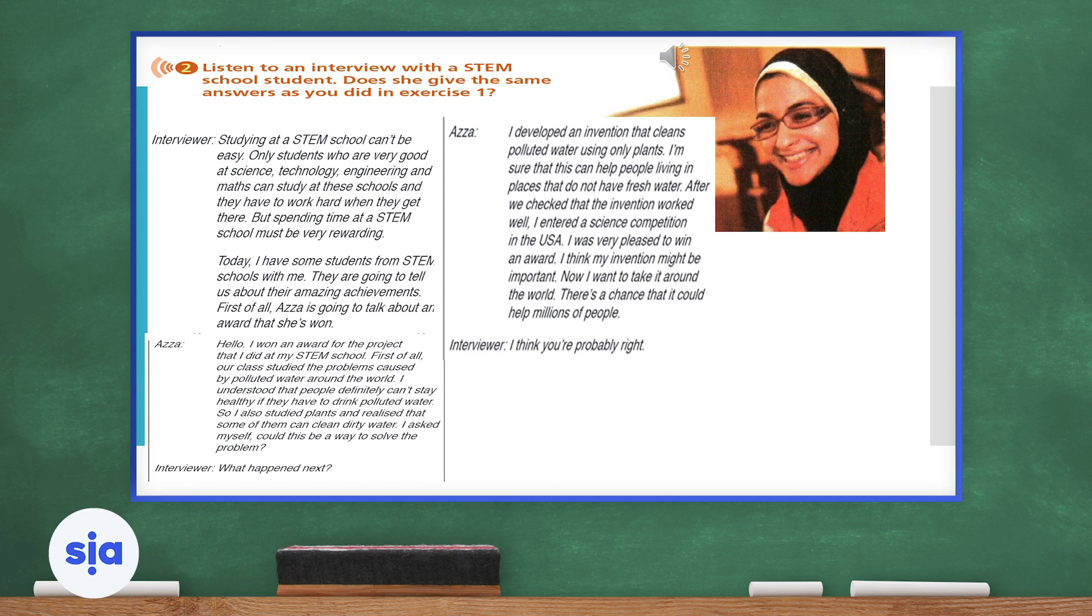Hello, I won an award for the project that I did at my STEM school. First of all, our class studied the problems caused by polluted water around the world. I understood that people definitely can't stay healthy if they have to drink polluted water. But I also studied plants and realized that some of them can clean dirty water. I asked myself, could this be a way to solve the problem?